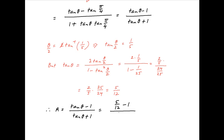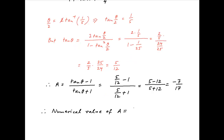This simplifies to minus 7 upon 17. Therefore the numerical value of a is equal to the modulus of minus 7 upon 17, which is 7 upon 17, and this is the required answer.